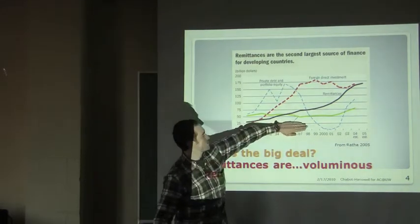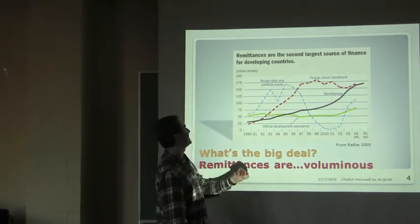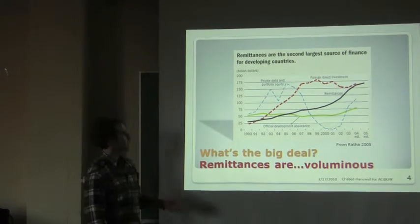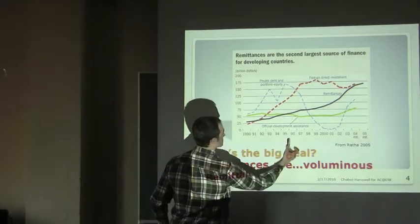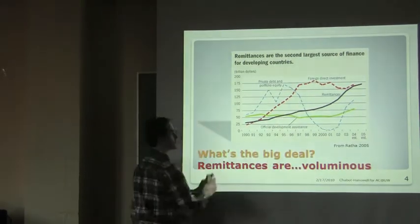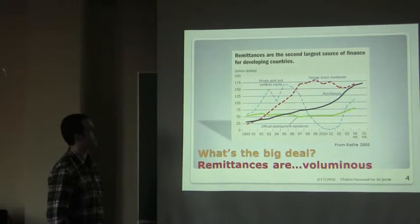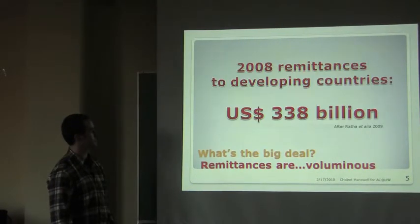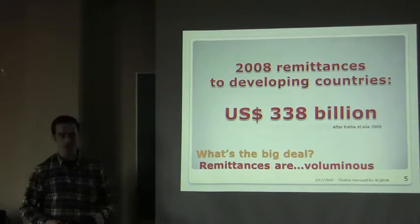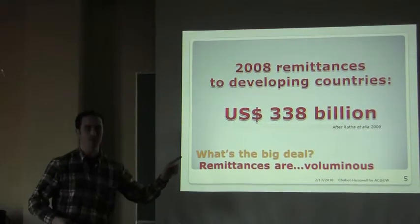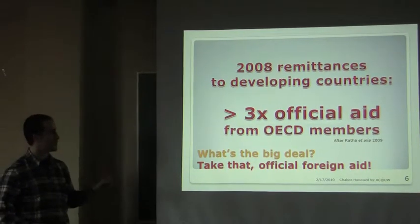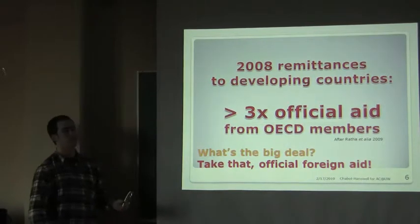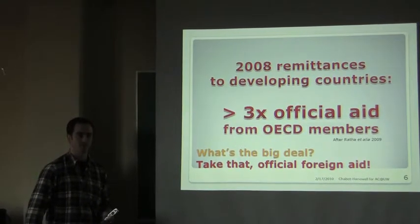The green line is official development assistance — foreign aid. Since the mid-1990s, remittances have surpassed official development assistance as a source of finance for developing countries. In 2008, remittances to developing countries totaled 338 billion dollars, which is greater than three times the official aid to developing countries from members of the Organization for Economic Cooperation and Development.